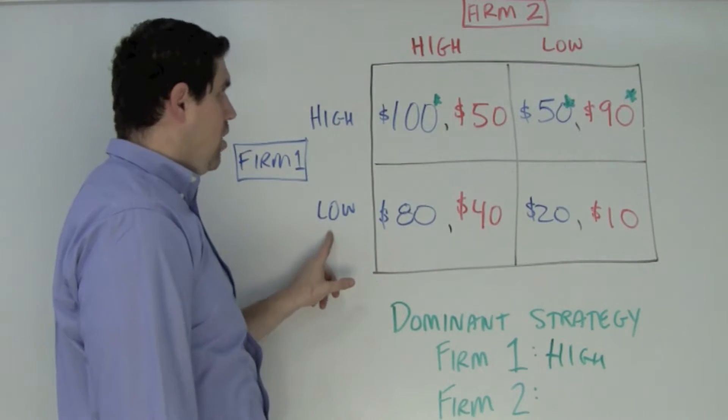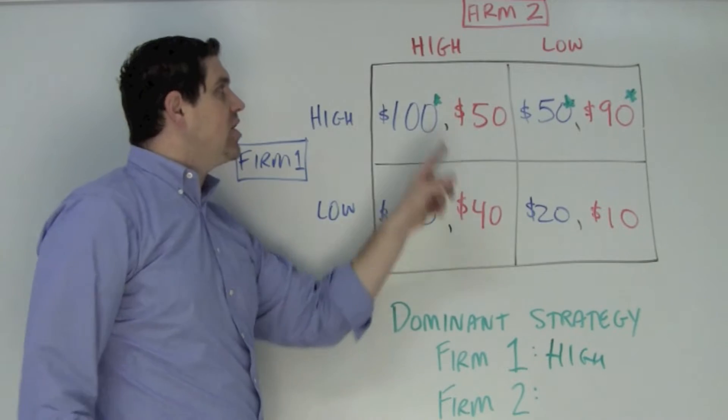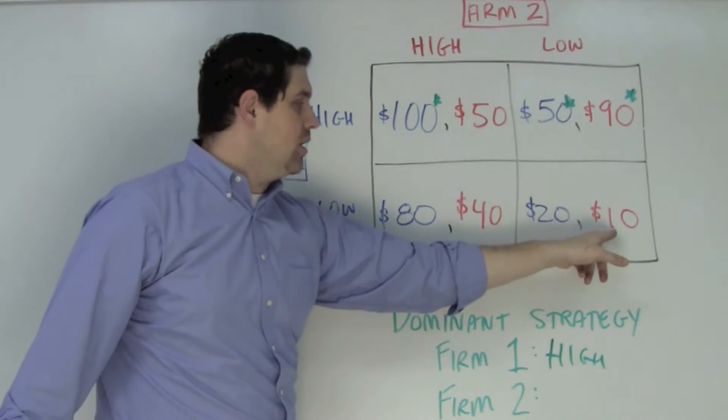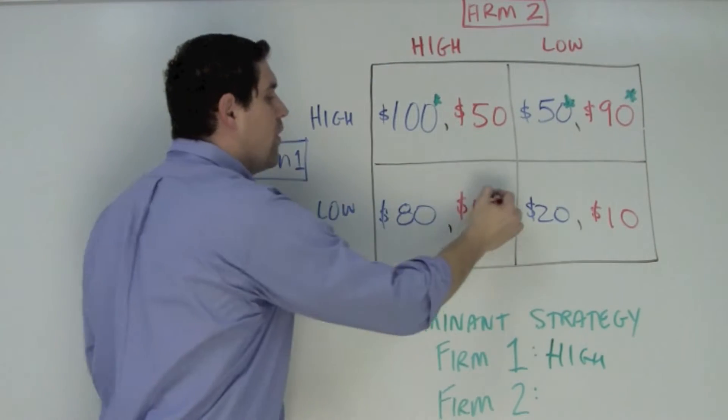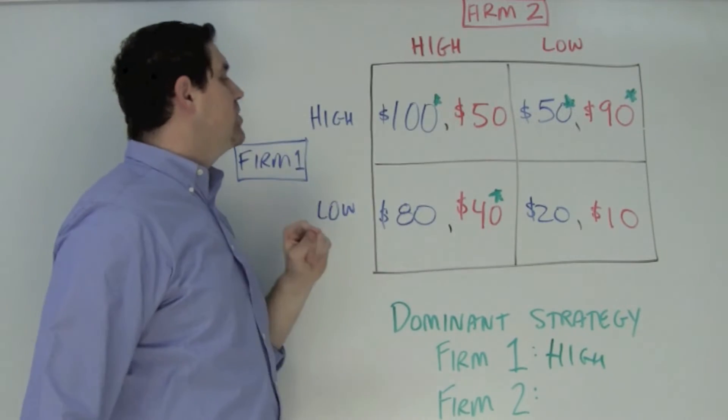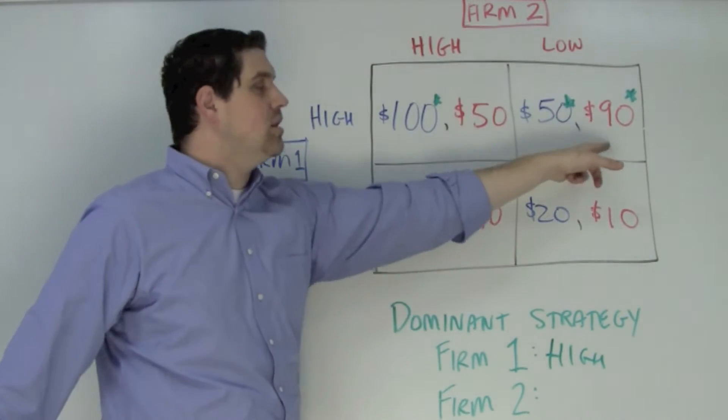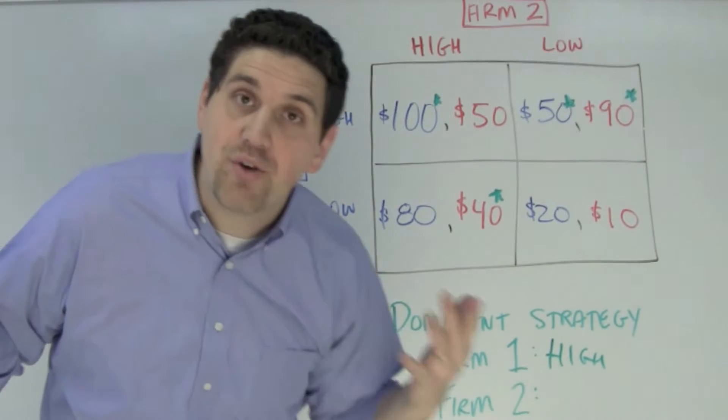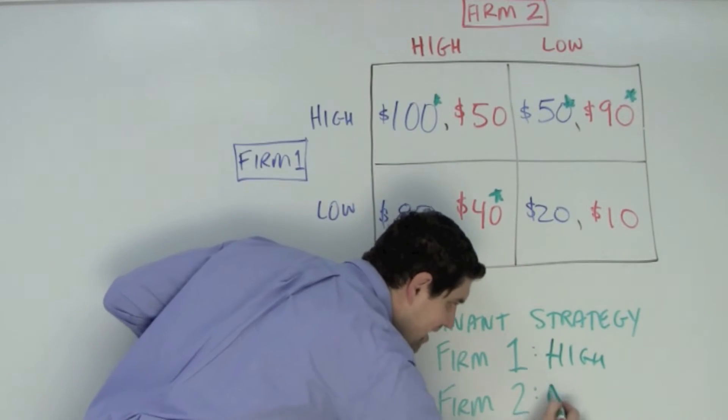If firm one prices low, firm two can choose between $40 pricing high or going low and getting $10. Firm two would rather price high and get $40. Now notice, sometimes firm two is going to price high, sometimes they would price low. So they do not have a dominant strategy. The dominant strategy is none.